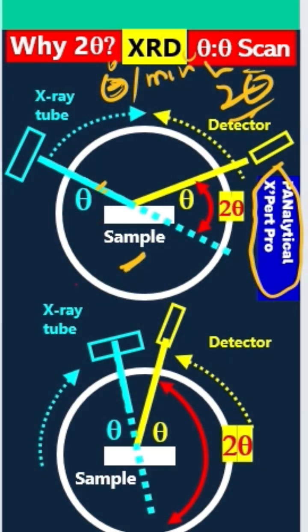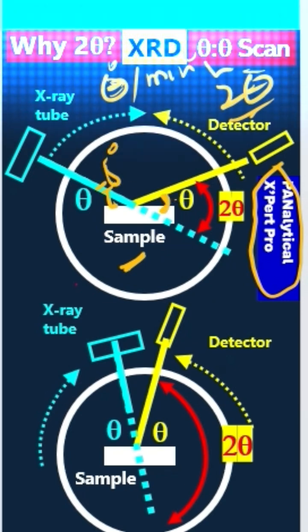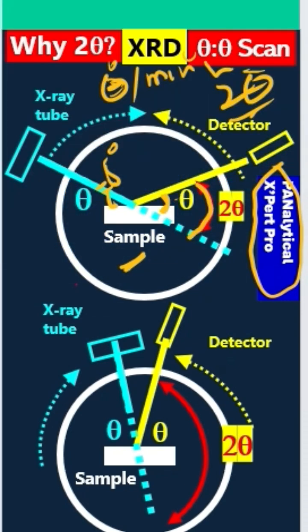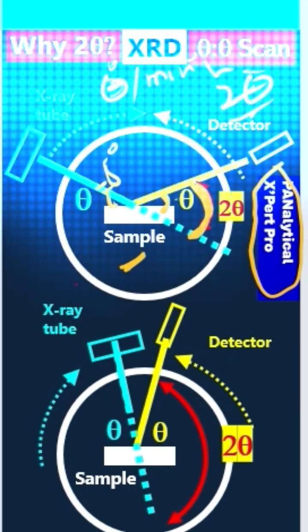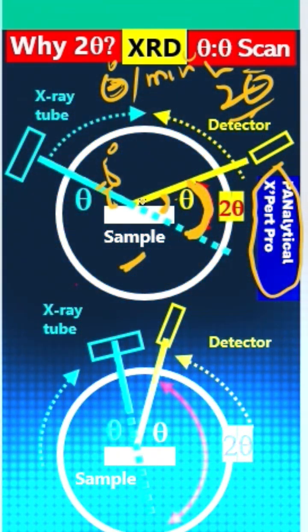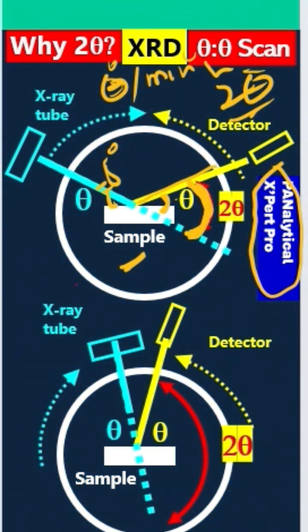Let's suppose this is the incident angle — say 5 degrees. The reflected angle is also 5 degrees. But the diffracted angle, which is between the reflected ray and the transmitted ray, should be 10 degrees here.